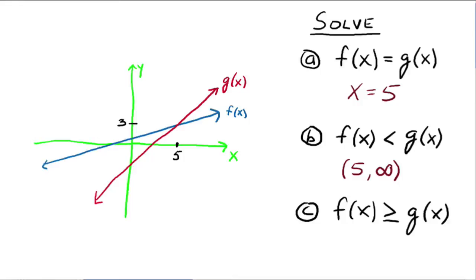Where is f(x) ≥ g(x)? We're looking for where the graph of f is above and equal to the graph of g. That would be from negative infinity all the way until we get to 5. The graph of f is always above the graph of g until x equals 5, where they're equal. So the solution in interval notation is (-∞, 5]. We don't need to know the explicit functions — if we have their graphs, we can answer these questions.